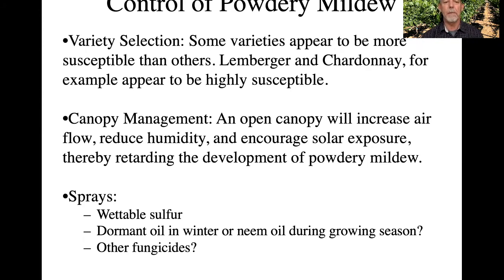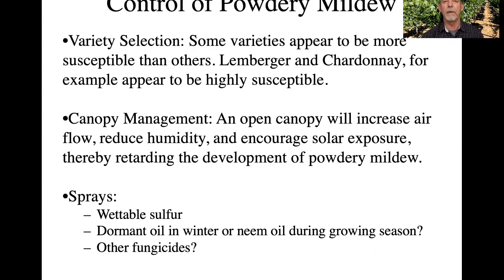Another way to control powdery mildew is by opening up your canopy to increase airflow, reduce humidity, and encourage solar exposure and warming. This will help retard the development of powdery mildew. It will also increase your ability to get spray into the interior of the canopy, where powdery mildew is most likely to grow in that cool, shady environment where transpiration is taking place. In addition to canopy management, we can also use fungal sprays.